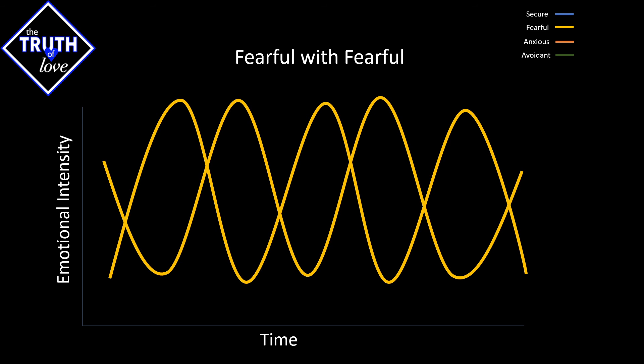Fearfuls and fearfuls have an interesting dynamic because, like I mentioned, they tend to mirror one another. What ends up happening here is you have an effect where all of a sudden the attachment styles tend to be the exact opposite of one another. There are times where they pull, there's times where they push. And this dynamic, believe it or not, can go on for years with both individuals believing that this is a normal relationship, that this is how we're supposed to interact with our partners.